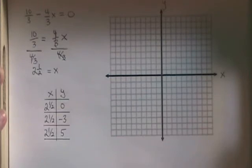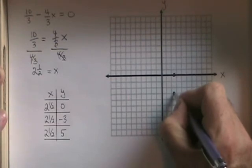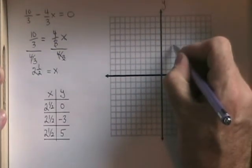Now I graph these points. 2 and a half, 0 is here. 2 and a half, negative 3 is here. And 2 and a half, 5 is here.